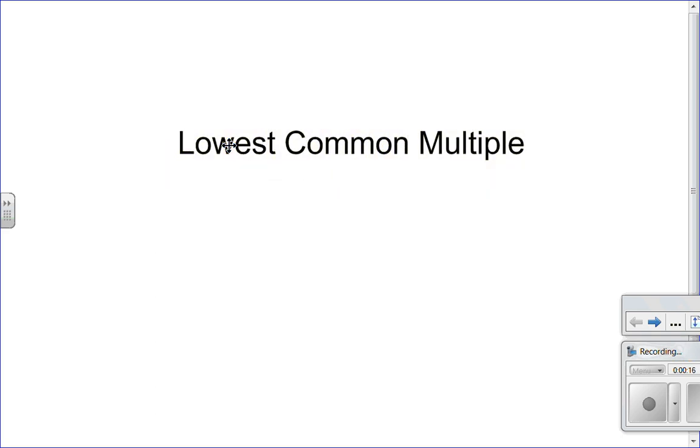What is it? How do we find it? Well, lowest common multiple is if I were to list out numbers and start skip counting their multiples, the lowest common multiple is the smallest one that matches.